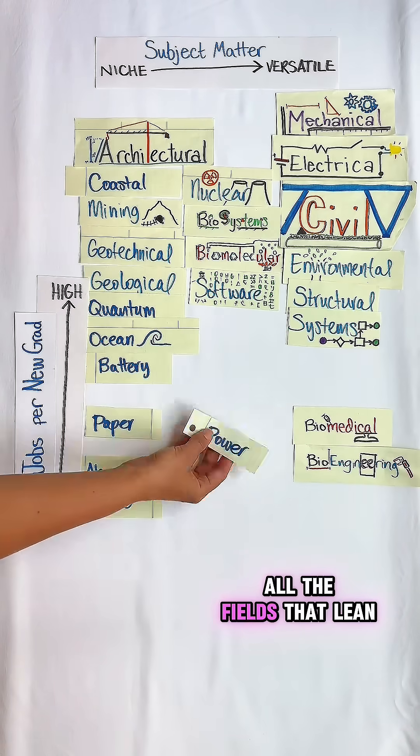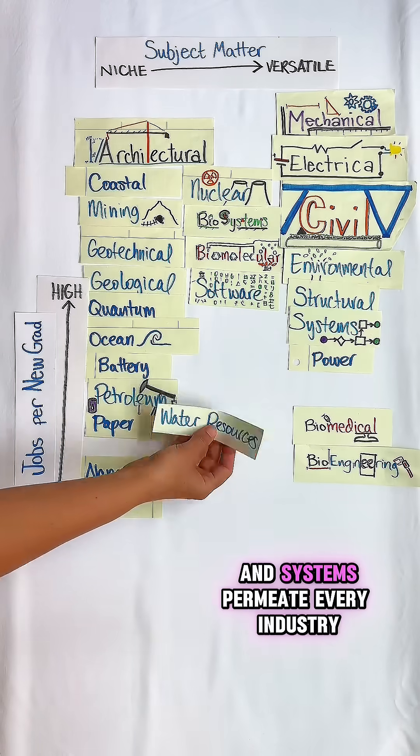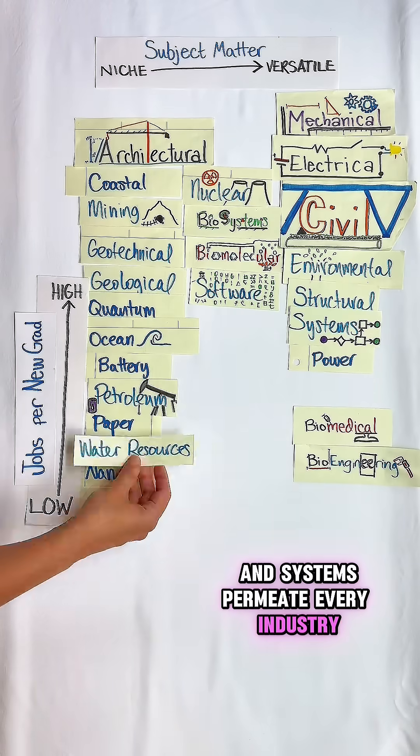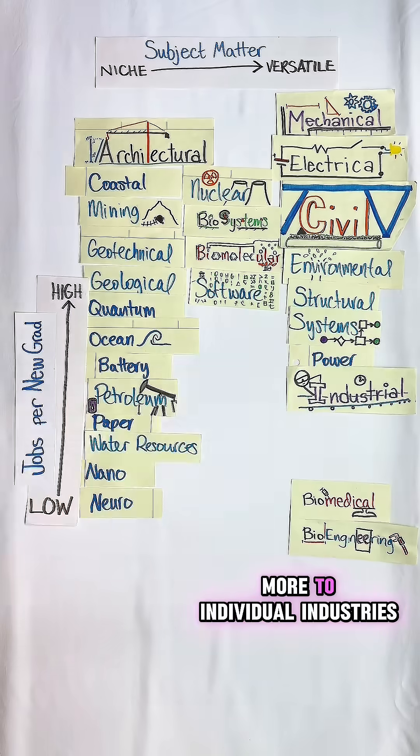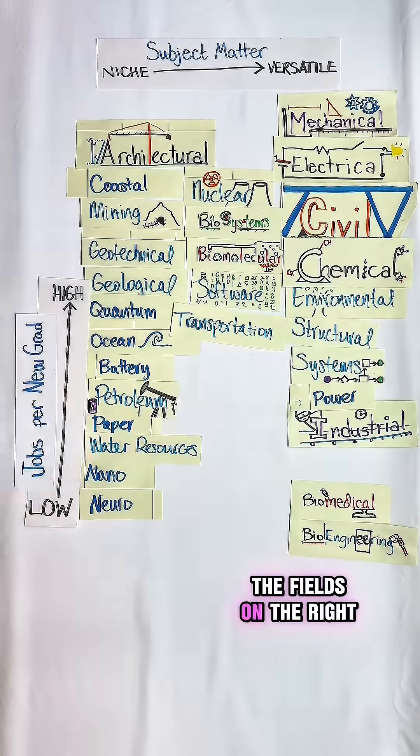And what you should notice is all the fields that lean more versatile are because they deal with systems, and systems permeate every industry. Whereas on the left, you have fields that cater more to individual industries, using a mix of the principles that are found in the fields on the right.